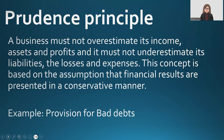Next, the Prudence Principle. A business must not overestimate its incomes, assets, and profits, and it must not underestimate its liabilities, losses, and expenses. The concept is based on the assumption that financial results are presented in a conservative manner — that you are making provision for possible losses. An example is provision for bad debts. Also, imagine a company has a pending lawsuit against it; although the outcome is uncertain, according to the Prudence Principle the company should recognize a potential expense related to the lawsuit in the financial statements. This means setting aside money for a potential payout even if the lawsuit has not yet been settled, so you show potential losses and do not overestimate your incomes.